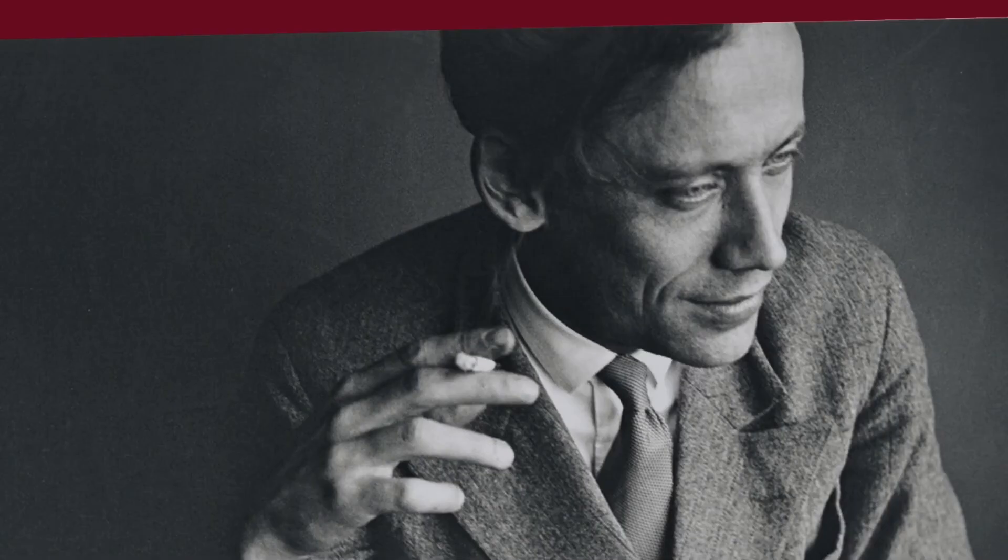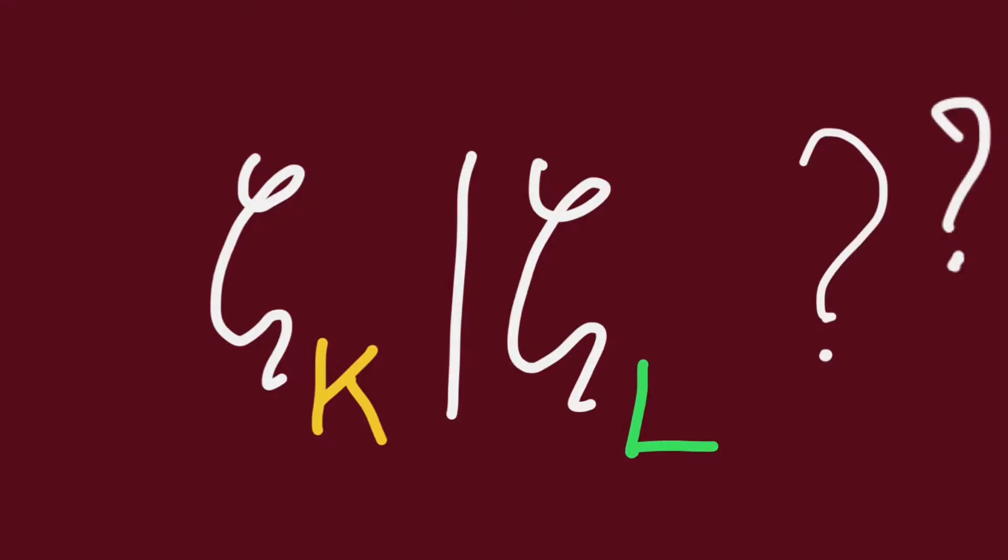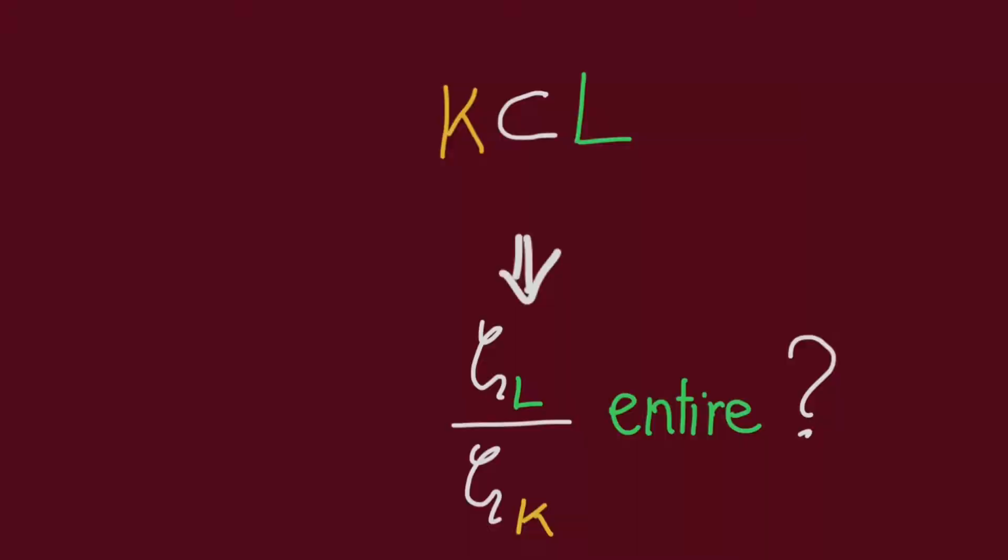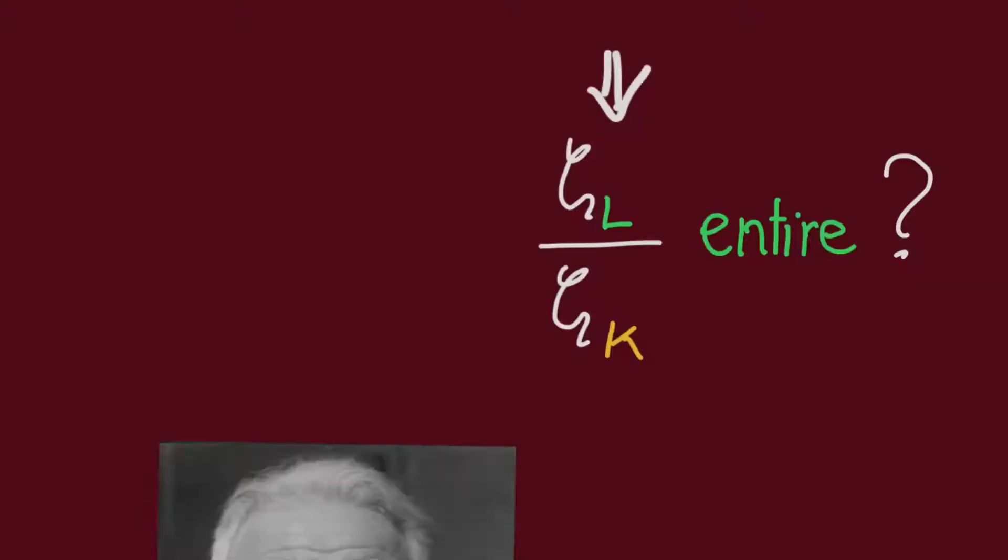Artin also has an L function. His interest in this came from his attempt to answer the question of whether zeta K would divide zeta L if K is a subfield of L. Or, to be more precise, if K is a subfield of L, does it mean that the quotient of zeta L over zeta K is entire?